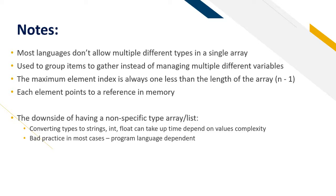Each element points to a reference in memory. The downside of having a non-specific type array or list is converting types to strings, integers, floats can take up time depending on how complex the value is it has to convert to. This is also dependent on how hard it is and how big it is. It's a bad practice in most cases due to program language dependent reasons, so it's always good practice to use an array that has the same data type throughout.